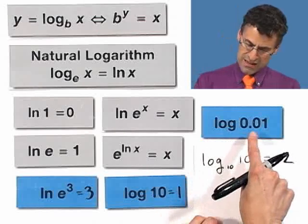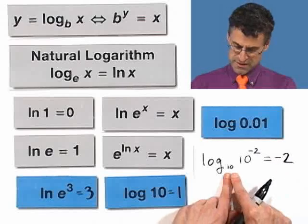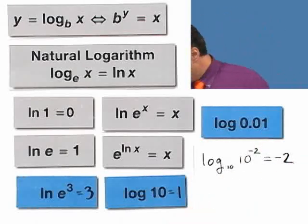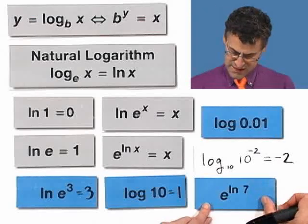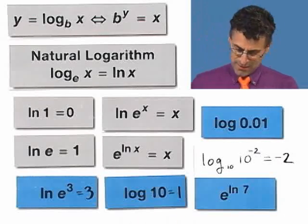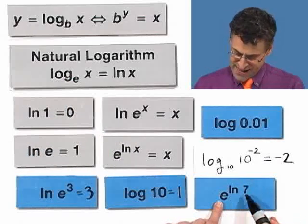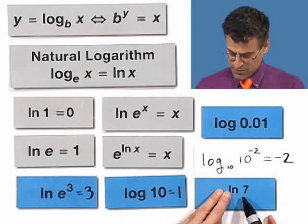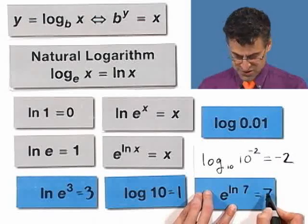And so the answer to this is negative 2. Kind of fun, isn't it, that the log of a tiny number is actually negative. And that makes sense because 10 to a negative power is something that's small. And then finally, what about e to the natural log of 7? This is the one that's so tricky. Remember, natural log means base e. So this is e to an exponent, and it is the exponent that I have to raise e to in order to have it equal 7. So what does the whole thing equal? It equals 7.